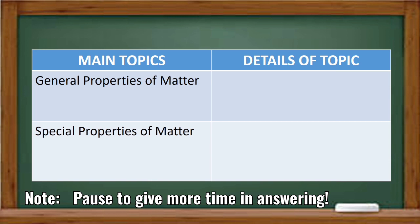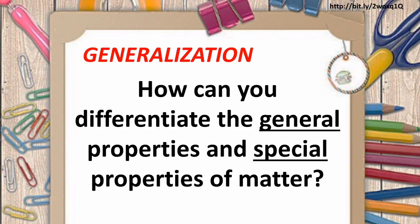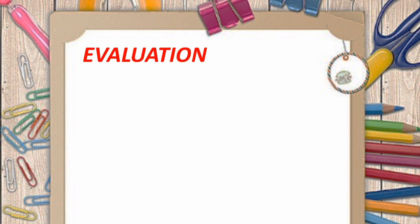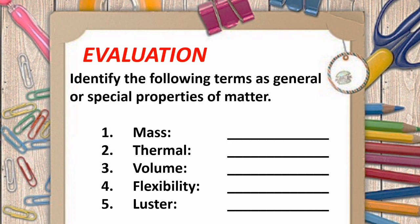Now answer this question orally: How can you differentiate the general properties and special properties of matter? Number 1 is mass. Number 2, thermal. Number 3, volume. Number 4, flexibility. And number 5, luster.